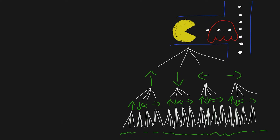Specifically, policies are about figuring out what actions to take. They actually map states to actions. You could imagine in this case we probably want to go right — we've already taken all the dots behind us. However, what if there's a ghost? Going right is probably not our best action, and an optimal policy is probably going to go left to get away from the ghost.